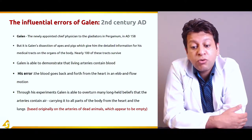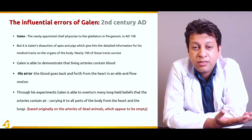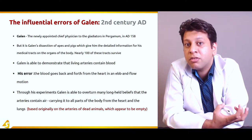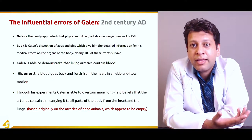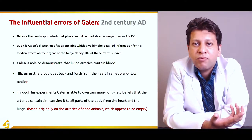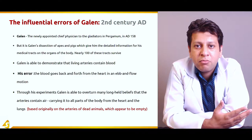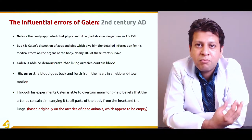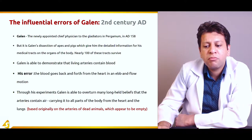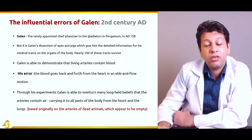Galen's major error was that blood goes back and forth from the heart in an ebb-and-flow motion. He conducted dissection on dead animals, in which the heart is not pumping and blood vessels are empty, so he thought blood flows in and then goes back to the heart. This ebb-and-flow theory was later proved wrong when later dissections on live animals showed that blood vessels are actually filled with blood. Through his experiments, Galen was able to overturn the long-held belief that arteries contain air.